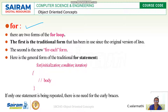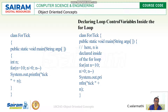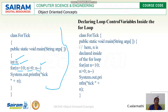The for loop has the format: initialization, condition, and iteration. For example: int n = 10 as the control variable declaration, n > 0 as the condition, and n-- as the decrement. Alternatively, the control variable can be declared inside the for loop itself as: for(int n = 10; n >= 0; n--).